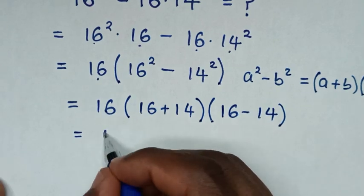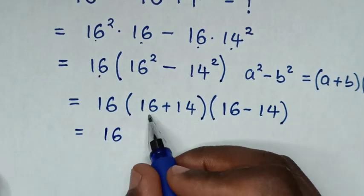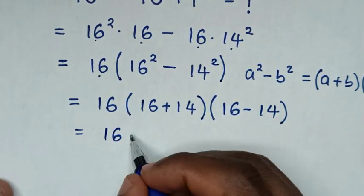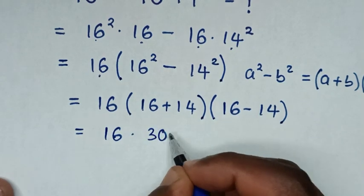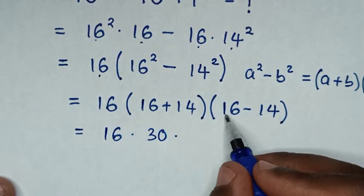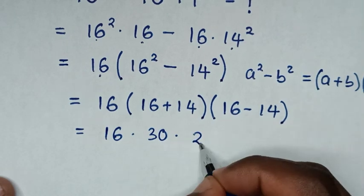Then it will be equal to 16, then 16 plus 14 is 30, so times 30, then times 16 minus 14 is 2.